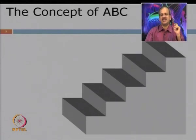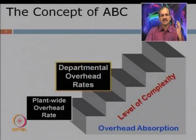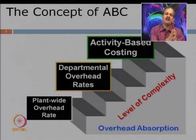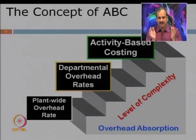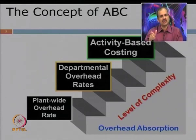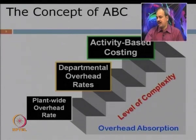As far as ABC is concerned, the simplest system is plant-based overhead, where we have only one cost rate for the whole plant. A slight improvement is a departmental or cost-center-based overhead rate, where costs are identified per cost center and then absorbed. In activity based costing, it is more complex and more sophisticated — we identify each activity and each cost driver for the activity, and then the costs are charged.